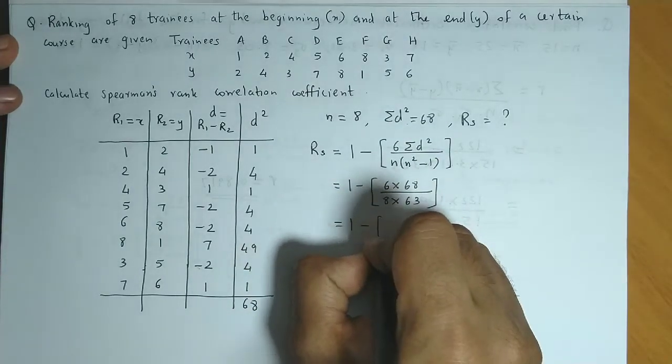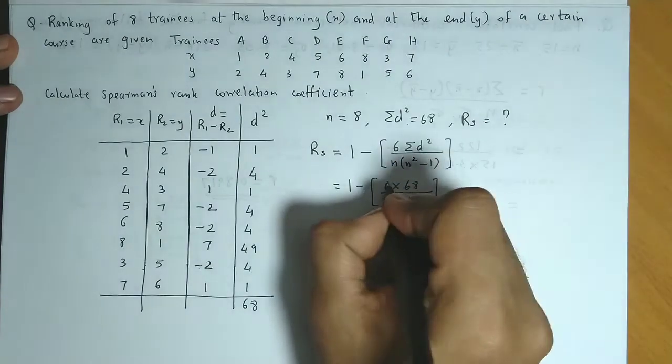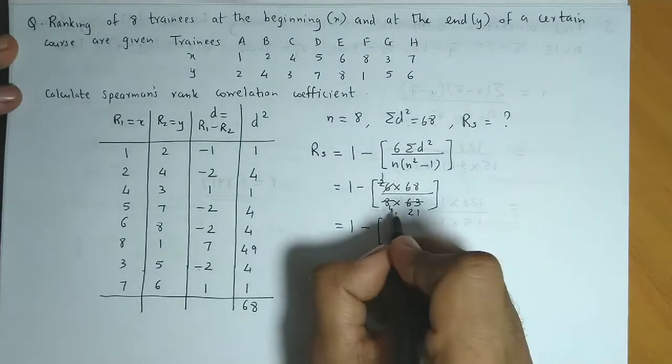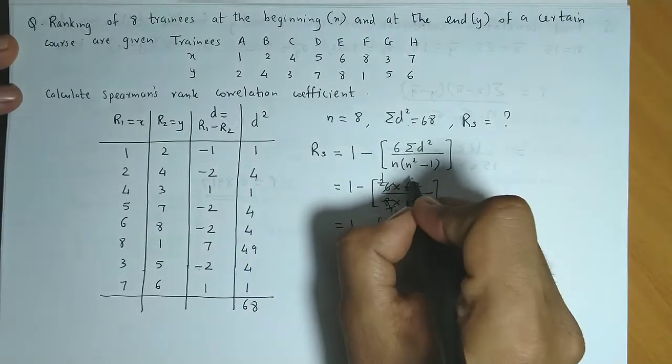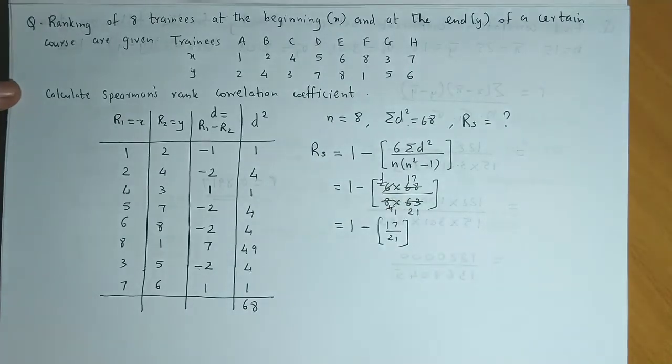Let us proceed further. So we reduce this by 3, 3 into 21, 3 into 2. Two ones are 2, two fours are 8, four ones are 4, four seventeens are 68. So 1 minus 17 by 21.